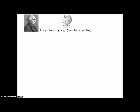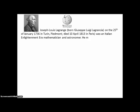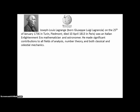Here's a picture of Louis Lagrange, who you may remember from the Lagrange remainder theorem. Joseph Louis Lagrange, born Giuseppe Luigi La Grancia on the 25th of January 1736 in Turin, Piedmont, died 10th of April 1813 in Paris. He was an Italian Enlightenment-era mathematician and astronomer who made significant contributions to all fields of analysis, number theory, and both classical and celestial mechanics.